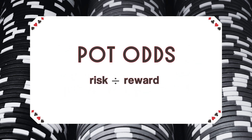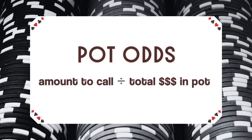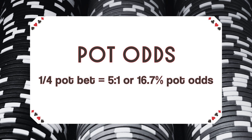Pot odds are a calculation of the amount you have to risk in order to reap the reward. To calculate it, take the amount you need to put into the pot in order to call the bet, and divide it by the total that will be in the pot once that bet is included. For example, if there's $40 in the pot and someone bets $10 to you — one-fourth of the pot — you are being offered five-to-one odds. That's one divided by six, because you add your bet into the calculation, which equals 16.7%.